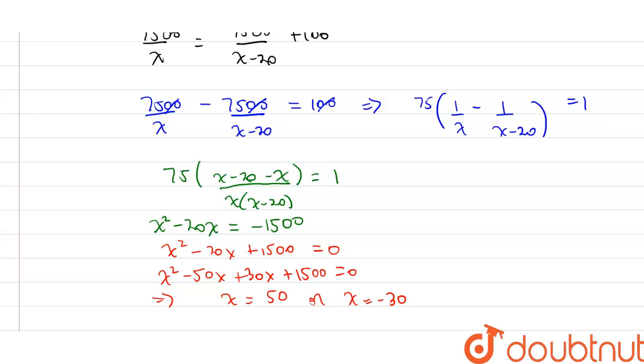But since it's the number of children, x cannot be negative. Therefore, we reject this answer and we get x is equal to 50.